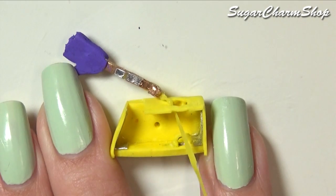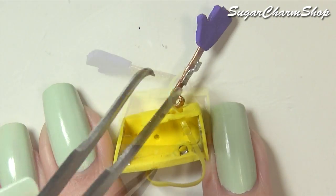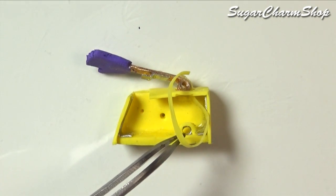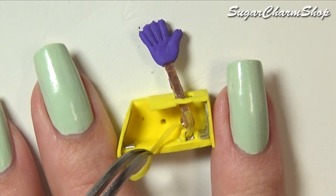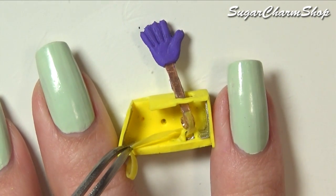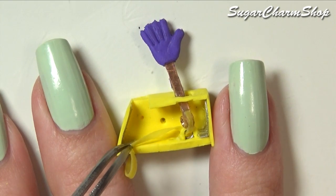You then want to pull the elastic through the hole at the top as well as a loop at the bottom. And then once again, you want to take a really strong glue and glue the other end of the elastic onto the bottom, then cut off any excess.